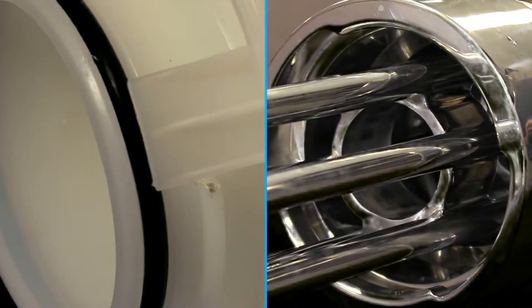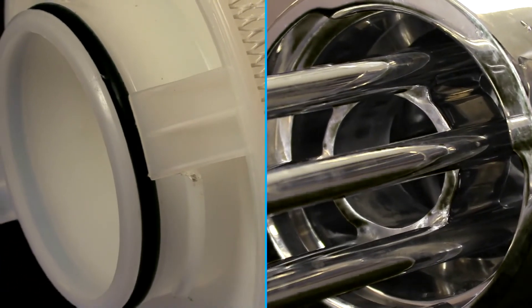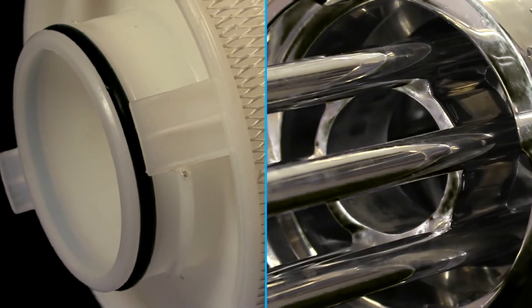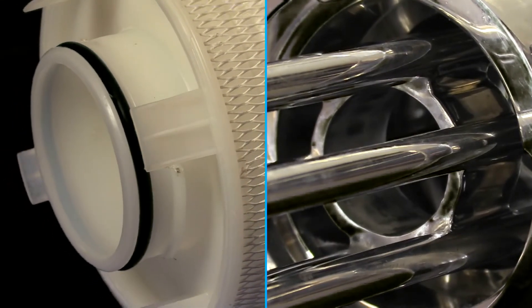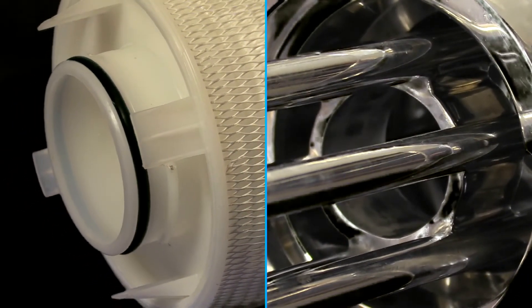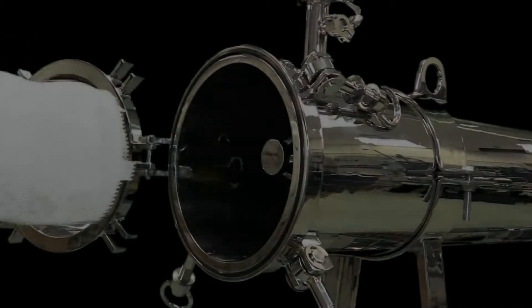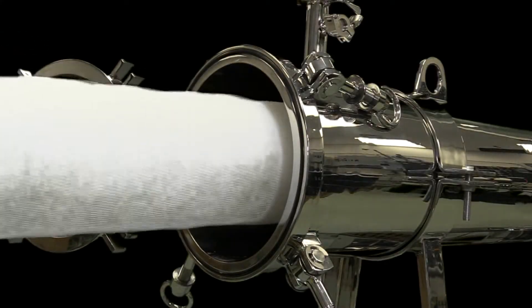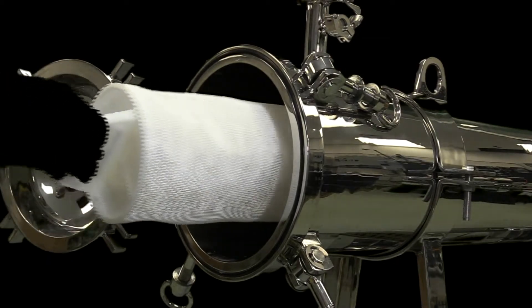The notched end of a high-flow filter fits into the housing base via a twist-to-lock seating mechanism that provides a positive leak-proof seal. Wet the high-flow filter o-ring.